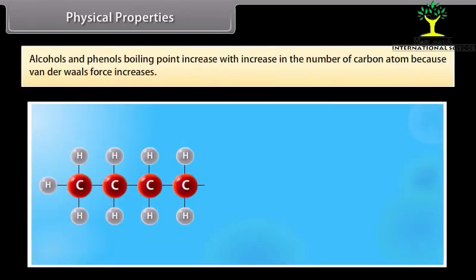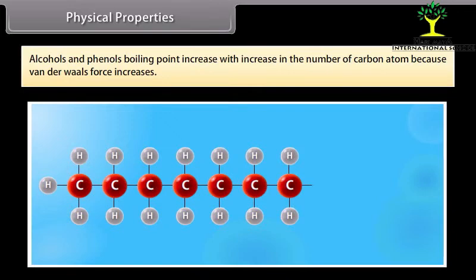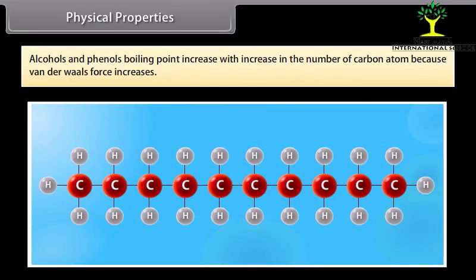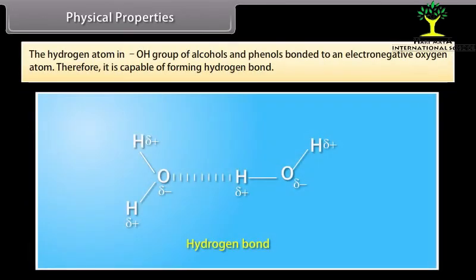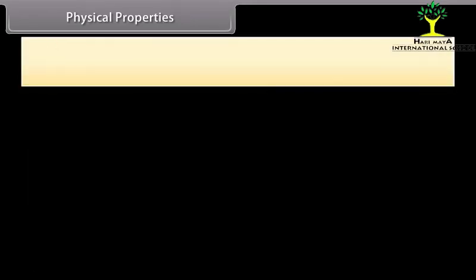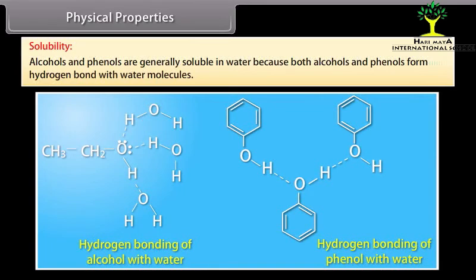The boiling point of alcohols and phenols increases with increase in the number of carbon atoms because van der Waals forces increase. With increase in branching in the carbon chain, the boiling point decreases because branching decreases surface area, which reduces van der Waals forces. The hydrogen atom in the O-H group of alcohols and phenols is bonded to an electronegative oxygen atom, therefore it is capable of forming hydrogen bonds. Solubility: alcohols and phenols are generally soluble in water because they form hydrogen bonds with water molecules.